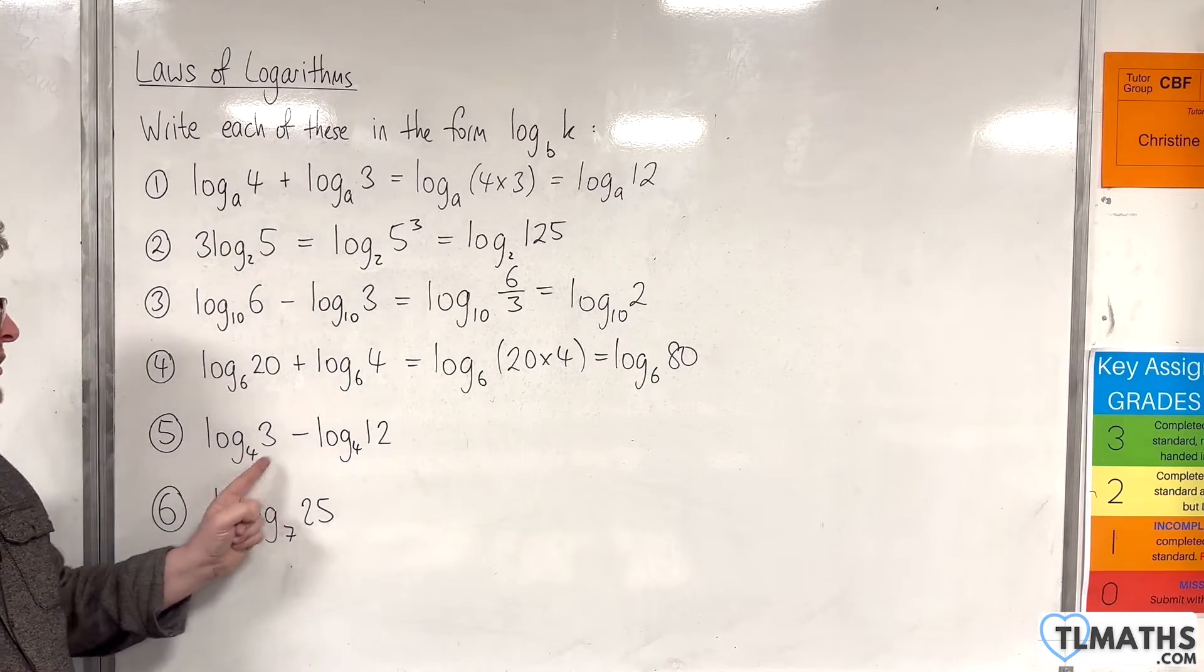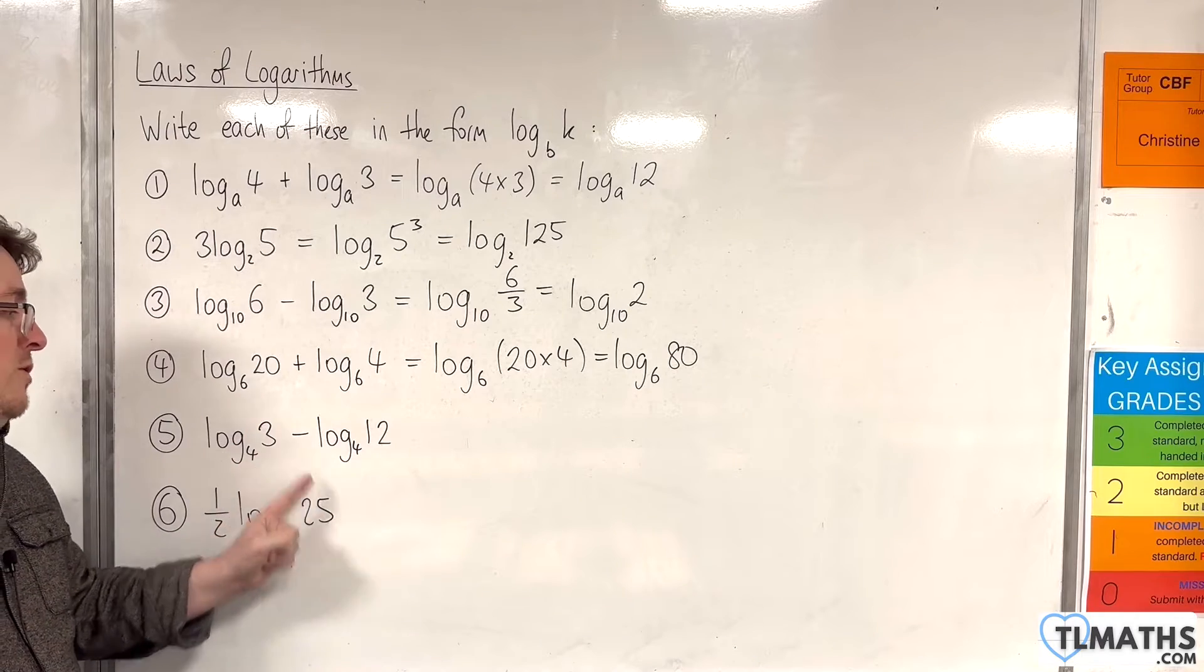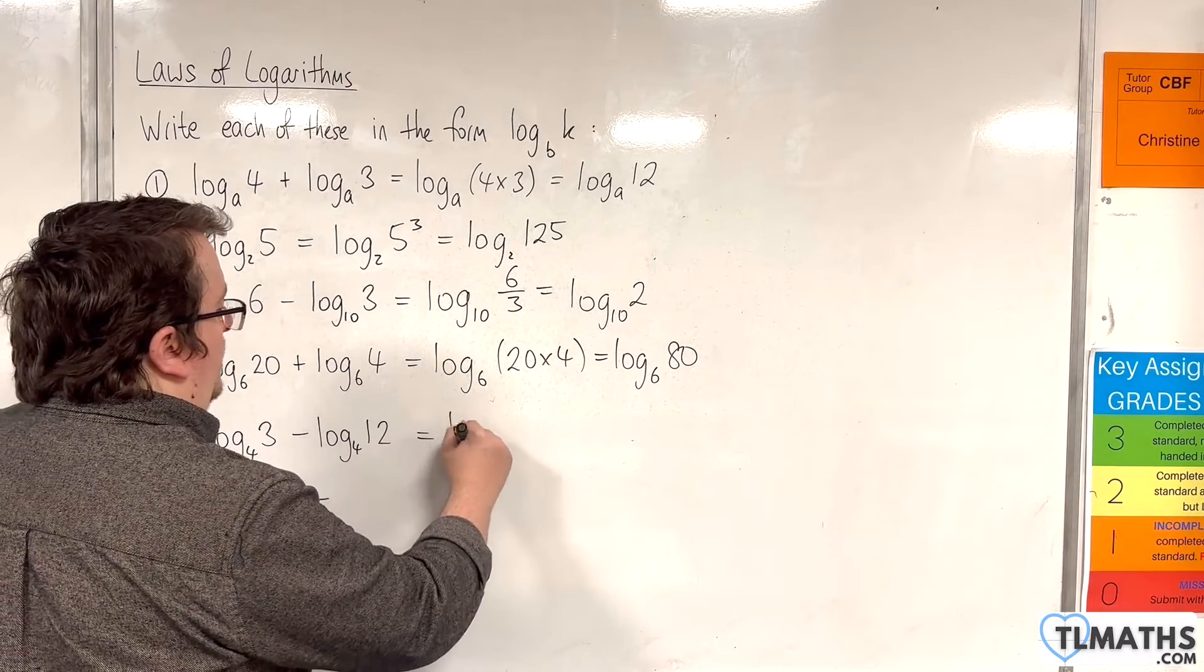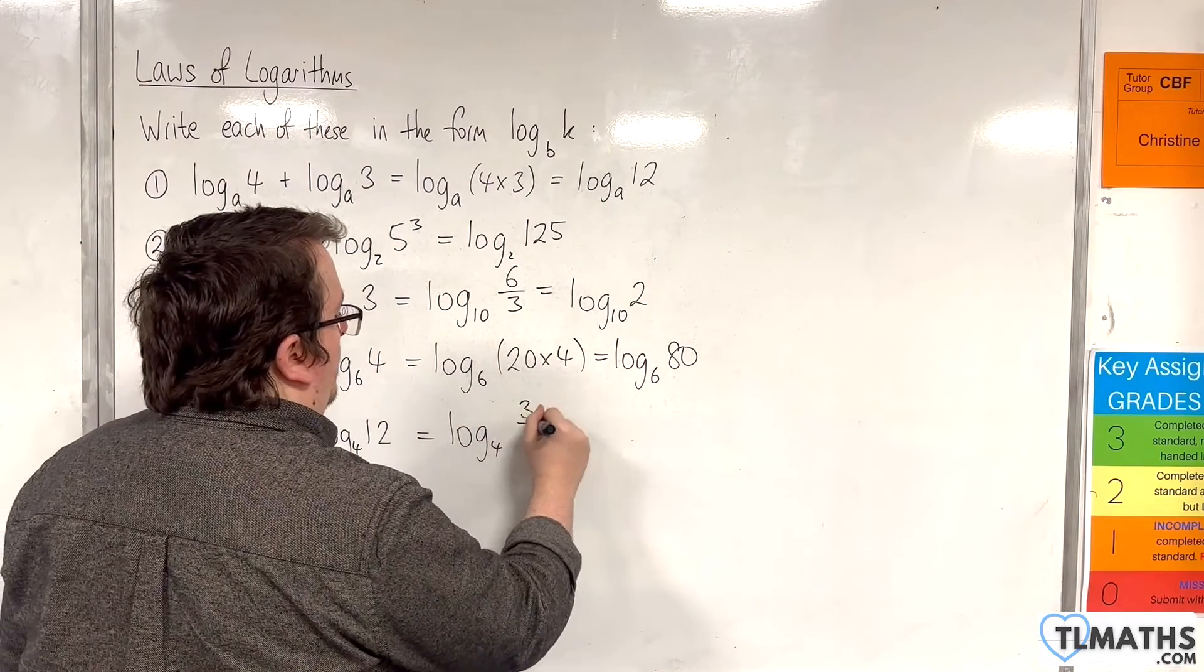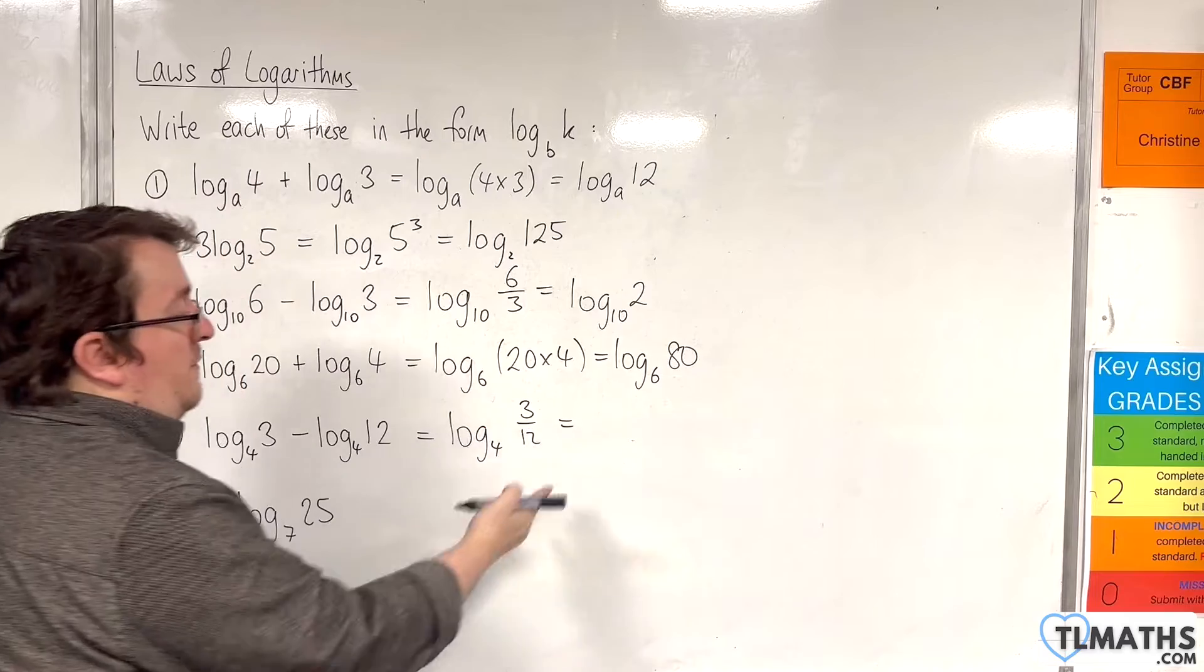Number 5, the base number is the same. We've got a subtraction so we're going to use the quotient rule. This will be log base 4 of 3 over 12. Now 3 over 12 is 1 quarter.